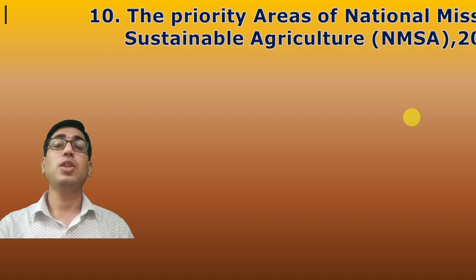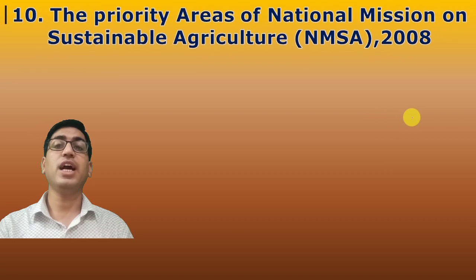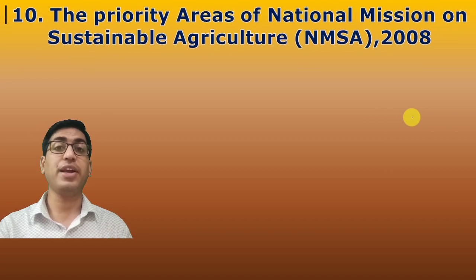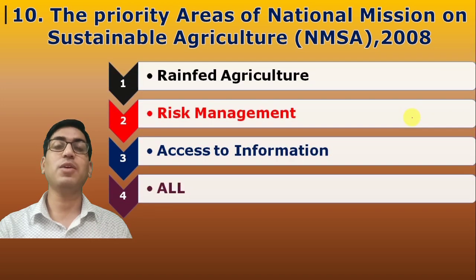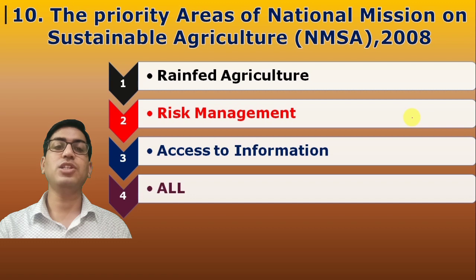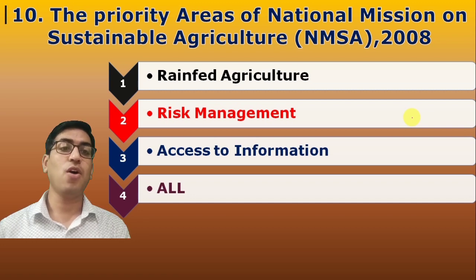Tenth question: The priority areas of the National Mission on Sustainable Agriculture (NMSA), launched in 2008, include which of the following — rainfed agriculture, risk management, or access to information? All three are priority areas, so the answer is all.